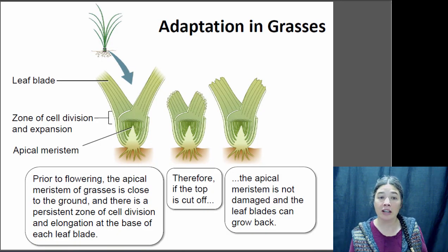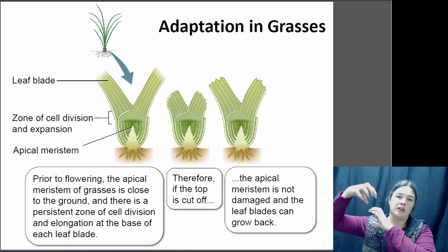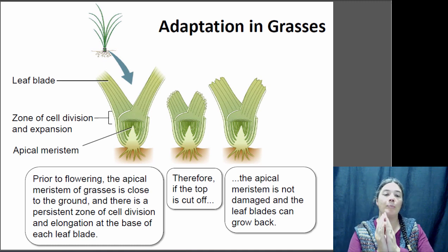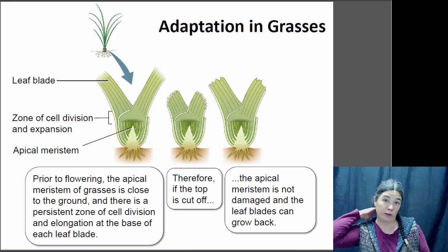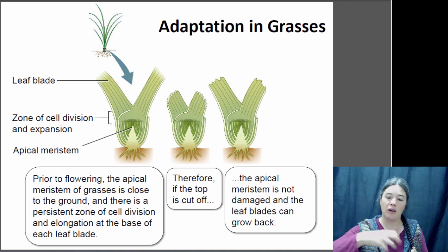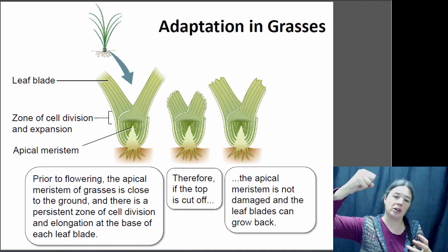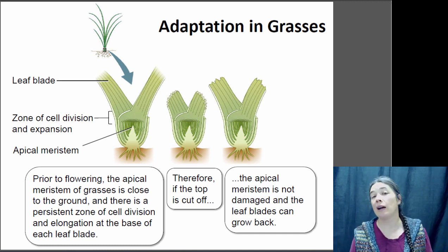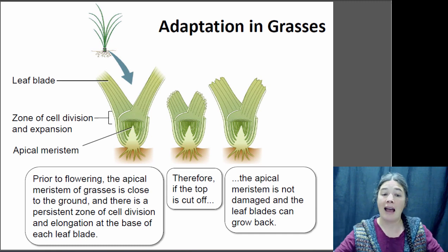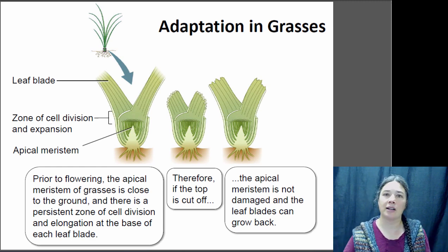Other plants have adapted to the fact that they're going to get eaten. Grasses normally have an apical meristem at the very top of the plant where cell division happens, but in grasses the apical meristem is located at the base. Cell division happens down at the base, and leaves grow longer and outward from there. When a cow, horse, or gazelle chomps off the top of the grass, the apical meristem is protected down at the base, so the grass can continue to grow. This is also why grasses make great lawns — mowing only chops off the leaves without damaging the apical meristem, so the grass keeps growing.